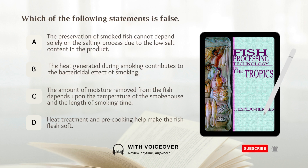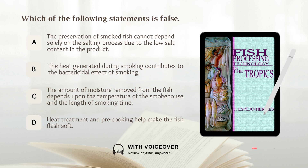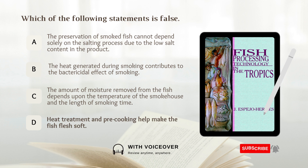Which of the following statements is false? A. The preservation of smoked fish cannot depend solely on the salting process due to the low salt content in the product. B. The heat generated during smoking contributes to the bactericidal effect of smoking. C. The amount of moisture removed from the fish depends upon the temperature of the smokehouse and the length of smoking time. D. Heat treatment and pre-cooking help make the fish flesh soft. Answer: D. Heat treatment and pre-cooking help make the fish flesh soft.